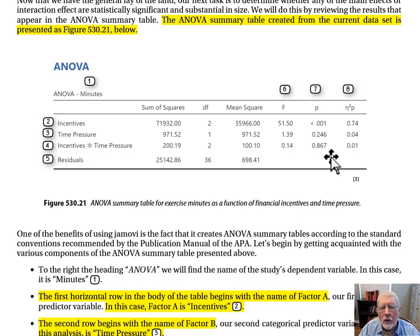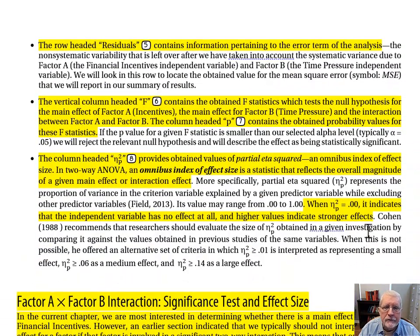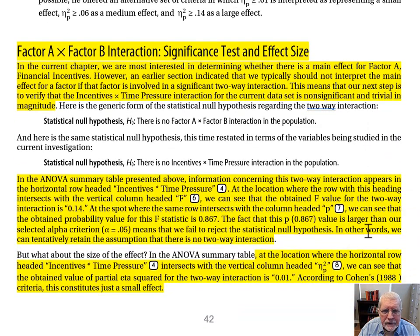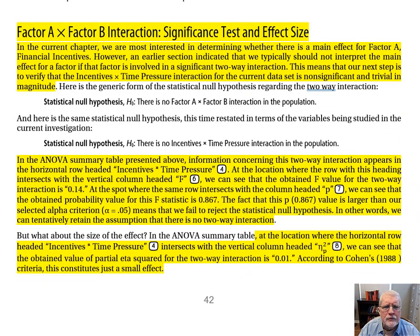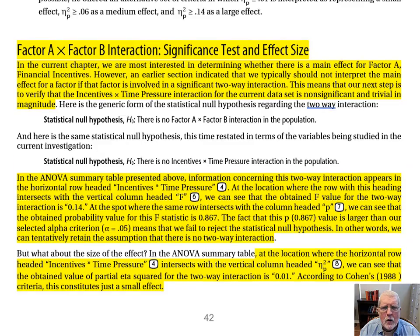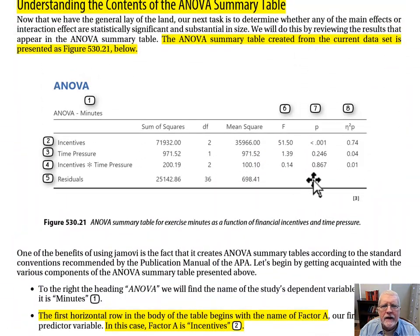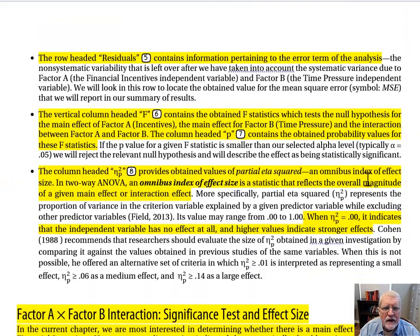That's usually good news for us if what we really want to interpret is the main effect. If the interaction effect were significant, we probably wouldn't want to interpret the main effect. At the location where the row headed 'Incentives by Time Pressure' intersects with the column headed partial eta squared, we can see that the obtained value is 0.01. According to Cohen's criteria, this is a small effect — consistent with the fact that we found it statistically non-significant.